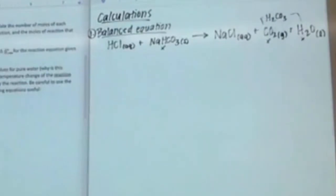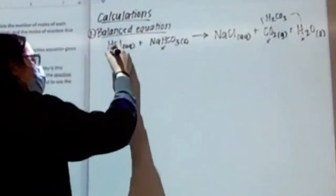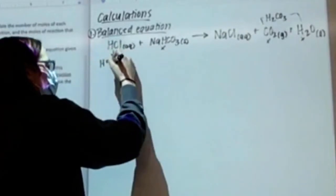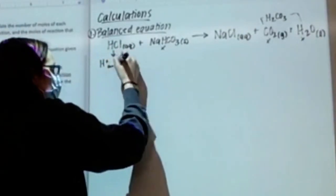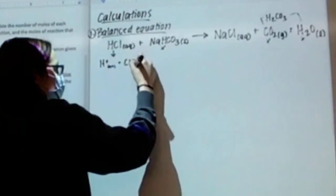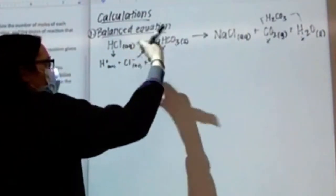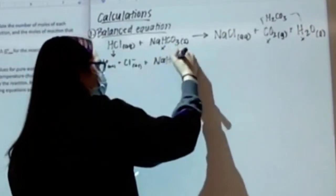Remember, to be a strong electrolyte it needs to be a strong acid, a strong base, or a soluble salt. Is HCl a strong acid? Yes. So HCl will actually break apart into H+ (aqueous) plus Cl- (aqueous). HCO3- cannot break apart, so I'm going to leave that alone.